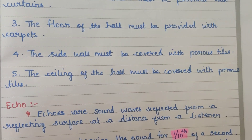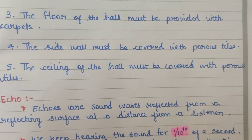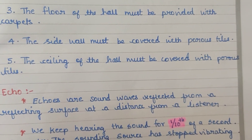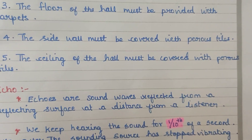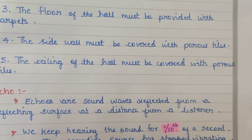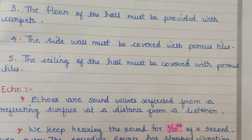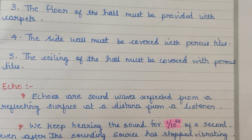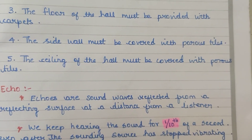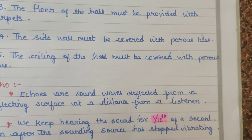The ceiling of the hall must also be covered with porous tiles. So the floor is covered with carpet, the windows and doors have curtains, and the walls and ceiling are lined with porous tiles. This is how we achieve good movie sound in a theater and avoid echo.